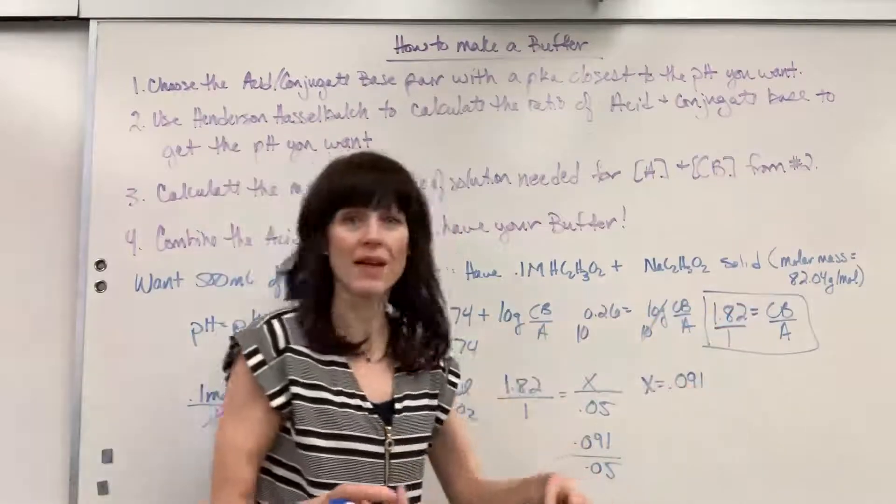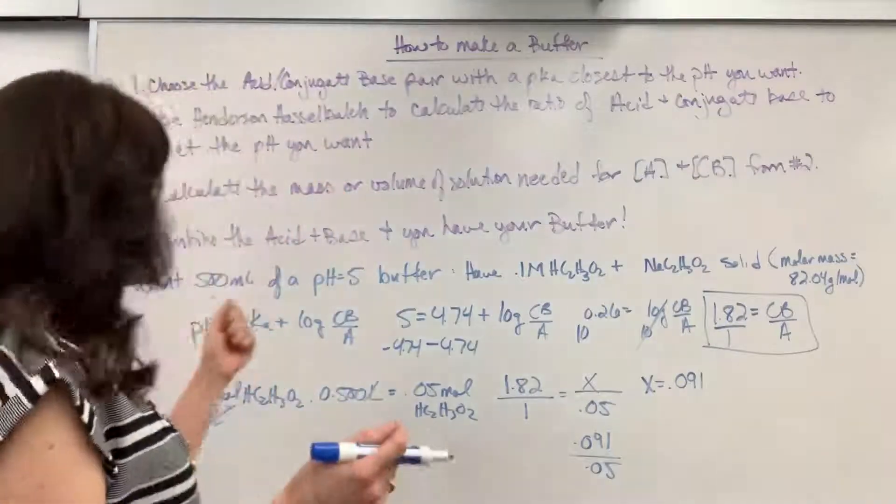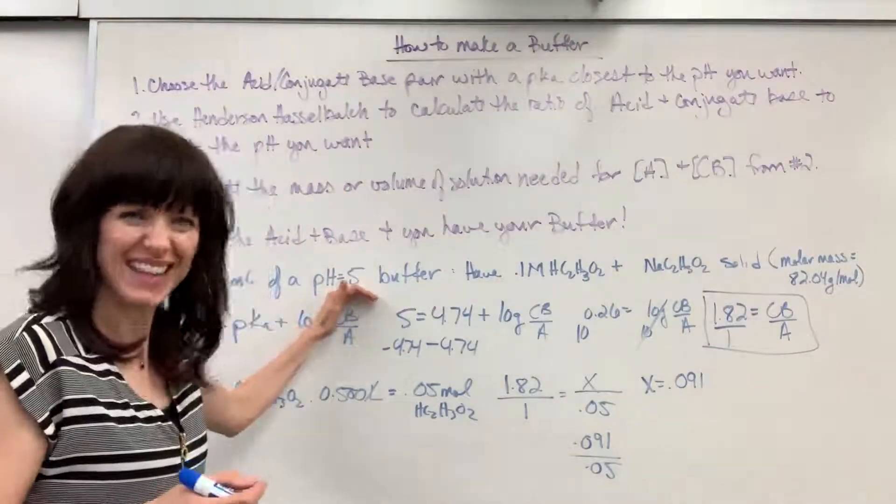I know inside of this are floating 0.05 moles of the acid. So if I can add 0.091 moles of the conjugate base inside that mixture, that solution, I'll have a buffer, whoo, with a pH of 5, like that.